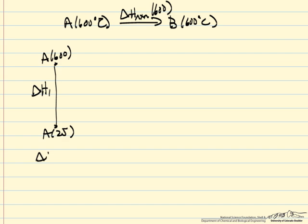So delta H1 is going to be an integral from 600 to 25, the heat capacity of A dT.